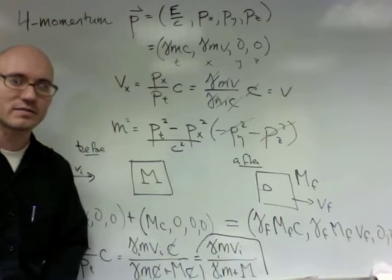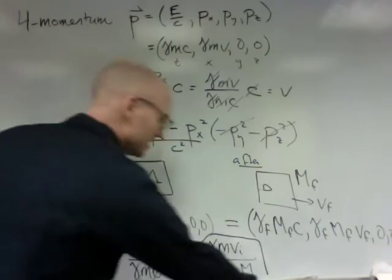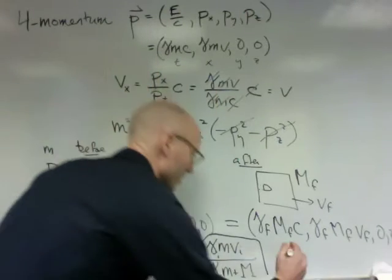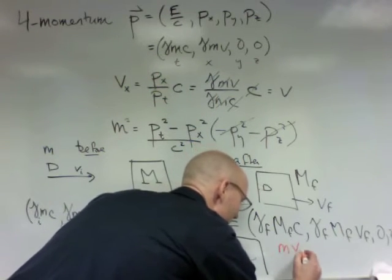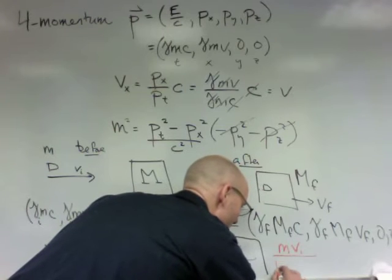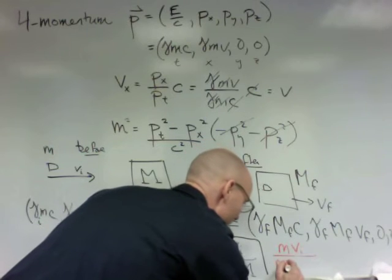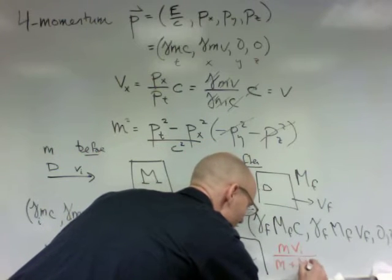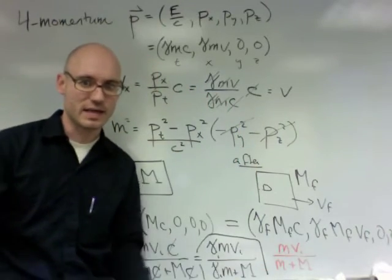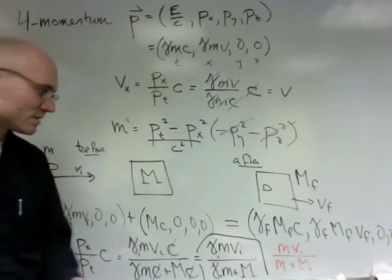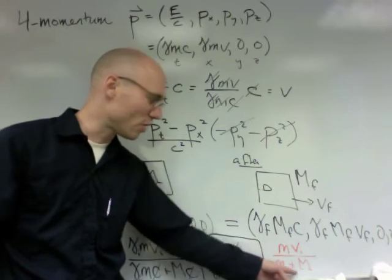Now, what was it in the non-relativistic case? In the non-relativistic case, let's see if my orange marker works. It was mvi over m plus m. This was the non-relativistic case. It was the original momentum over the total mass.